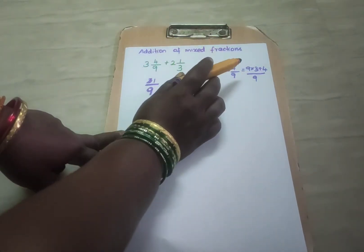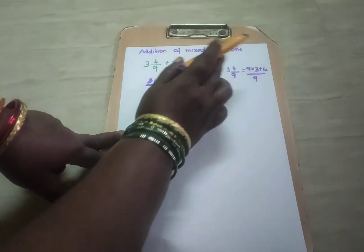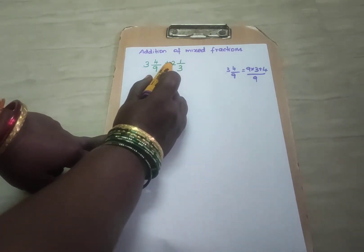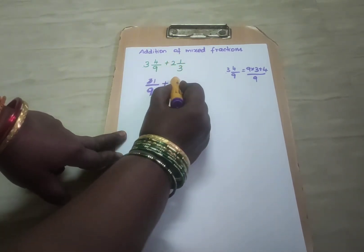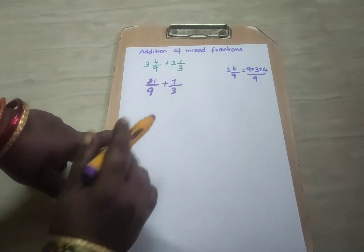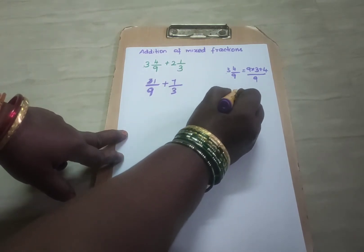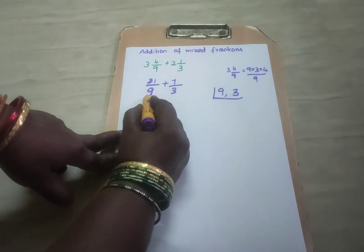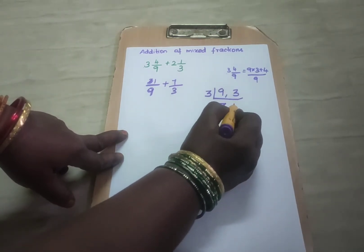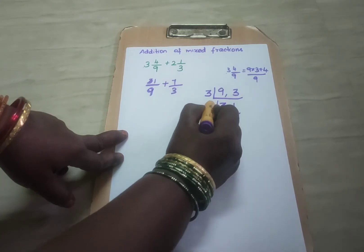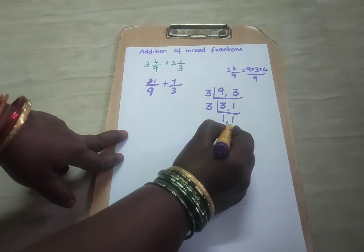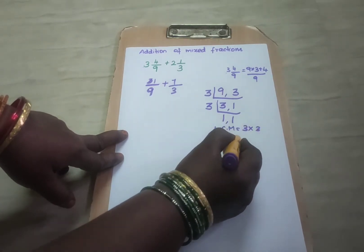So it is 31 by 9. This is the method of converting mixed to improper: 9 threes are 27, and 27 plus 4 is 31. Here also, 3 twos are 6, and 6 plus 1 is 7 by 3. Now we have to find the LCM for the denominators 9 and 3. Using 3: 3 threes are 9, 1 three is 3. And again 3: 1 three is 3, leaving 1. So your LCM is 3 into 3, which is 9.